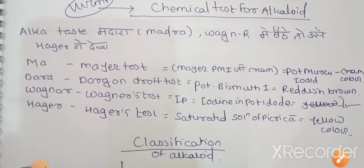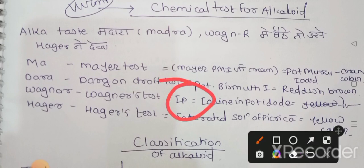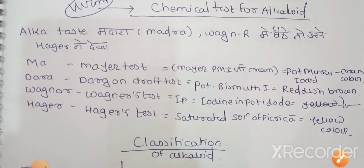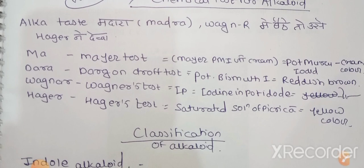Wagner test - Wagner kept IP (Indian Pharmacopoeia), so from IP you get iodine in potassium iodide, and the color it gives is reddish brown color.